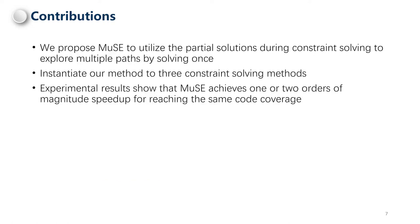The contributions of this work are threefold. First, we propose MUSE to utilize partial solutions for exploring multiple paths by solving once. Second, we have instantiated the idea of partial solutions for three constraint-solving methods and implemented MUSE on two symbolic execution engines. Finally, we conducted extensive experiments on real-world programs. The results show that MUSE achieves one to two orders of magnitude speedup for reaching the same code coverage.